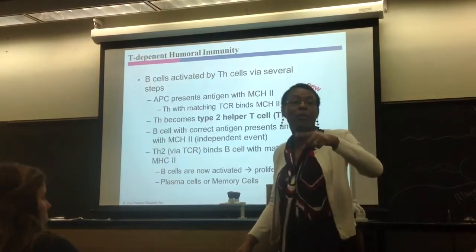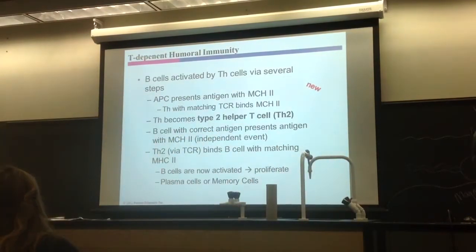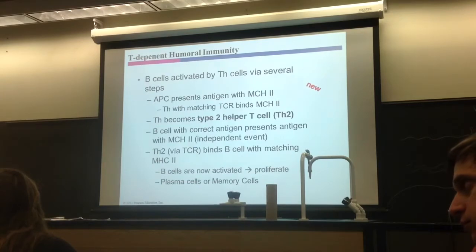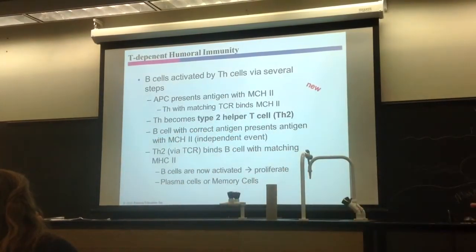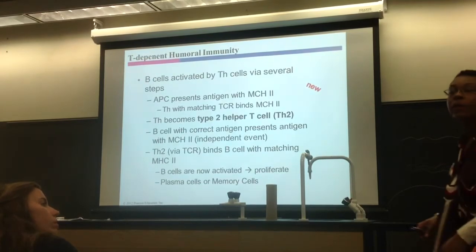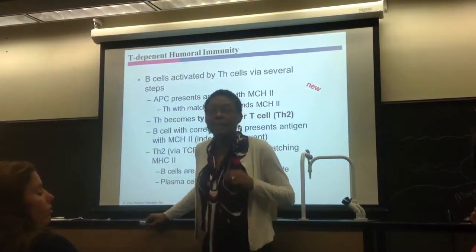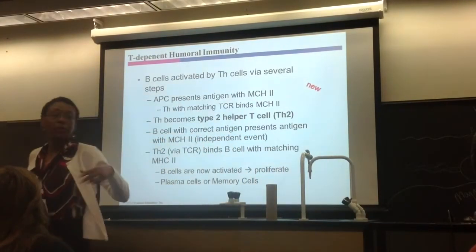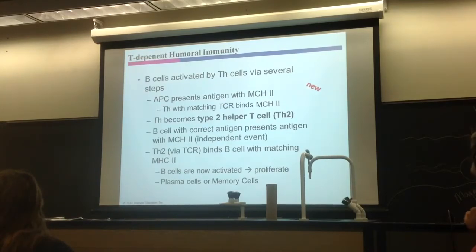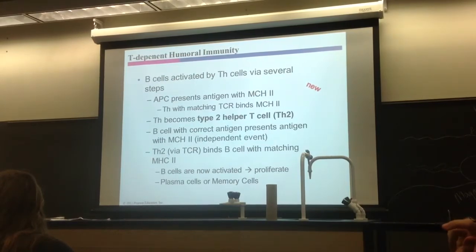When the TH2 and the B-cell hook up, that B-cell is now activated — similar to how the TC cell was activated. When I say a cell is activated, it makes clones of itself. At that point, most of the clones become plasma cells. Plasma cells are B-cells secreting antibodies — about 1,000 per second. That's all they do: secrete many, many antibodies against that one epitope that started the whole process.